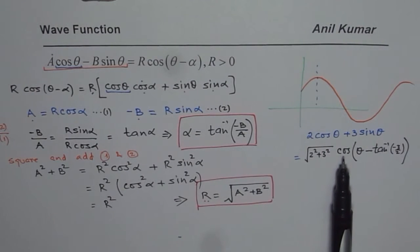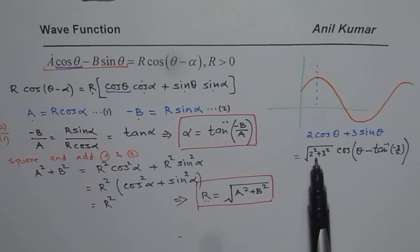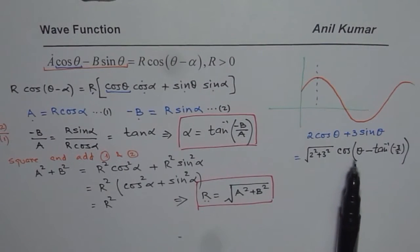That is how you can write any combination of sine and cosine as a cosine function. And now from here we can sketch this function. We know what is the maximum value, which is square root of 2² plus 3². So likewise we can do many related questions.